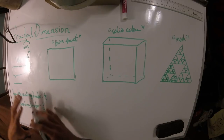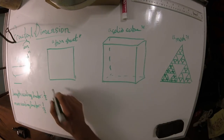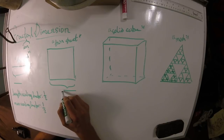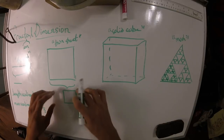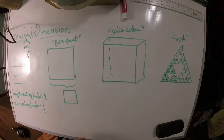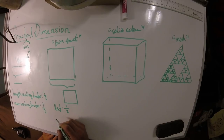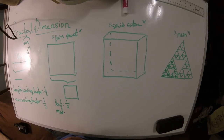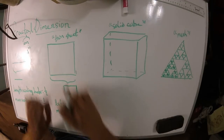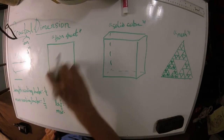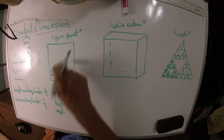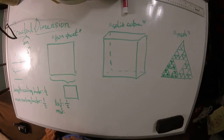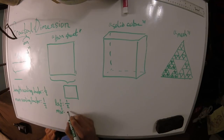Let's move on to the square - this thin sheet - and scale its length down by a half. We've got a square whose length is one half the length of the original, so its length scaling factor is one half. To figure out its mass scaling factor, we have to think about how many of these smaller squares we'd need to make the original. If you tried to fill the bigger one with smaller squares that are half the length, you would need four of them. So this mass scaling factor is one fourth.